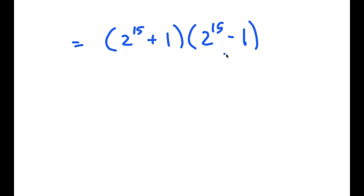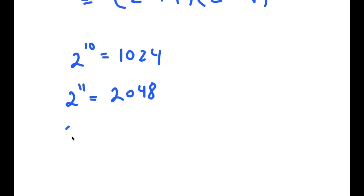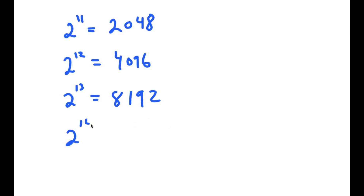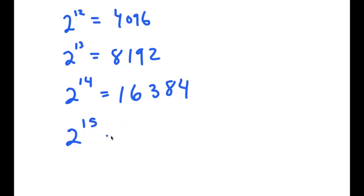Now, 2 to the power of 15 — what's the value of that? Well 2 to the power of 10 is 1024. So 2 to the power of 11 is double of 1024, which is 2048. 2 to the power of 12 is double of 2048, which is 4096. 2 to the power of 13 is double of 4096, which is 8192. 2 to the power of 14 is double of that, which is 16,384. And finally 2 to the power of 15 is double of that, which is 32,768.